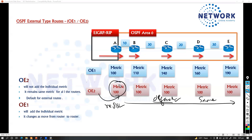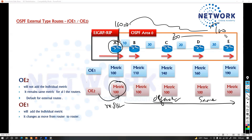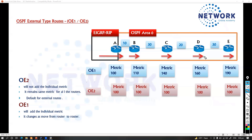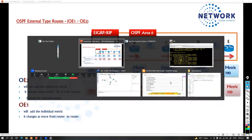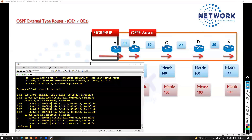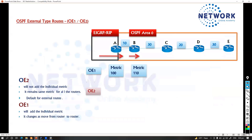Most of the time you don't want the redistribution metric to stay at 100 after crossing 20 or 30 routers — that's not ideal because the metric should increment based on individual path cost. So it's always recommended to change to E1. Let's verify E1 and E2 in our topology.